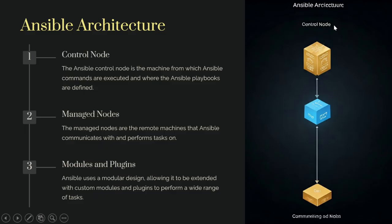Ansible architecture consists of the Control node and the Managed nodes. The Ansible Control node is the machine from which Ansible commands are executed and where the Ansible playbooks are defined. The managed nodes are the remote machines that Ansible communicates with and performs tasks on, using modules and plugins.